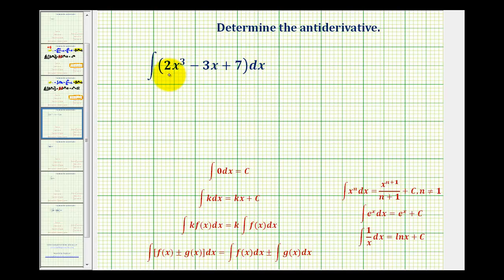We want to determine the anti-derivative of 2x cubed minus 3x plus 7 with respect to x. The directions may also say evaluate the indefinite integral. What we want to do here is find a function that has a derivative of 2x cubed minus 3x plus 7.